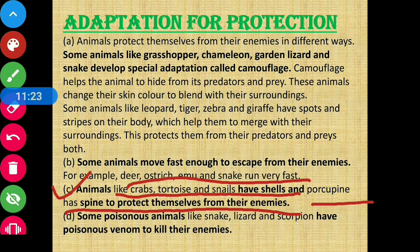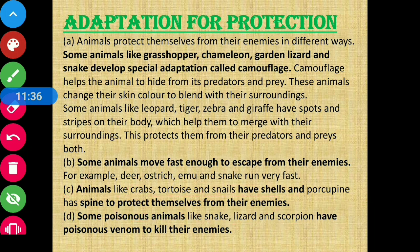Another way of protection is through venom. Some poisonous animals like snake, lizard, and scorpion have poisonous venom to kill their enemies. Venom means poison — they have poisonous venom which can kill their enemies, and in this way they protect themselves.